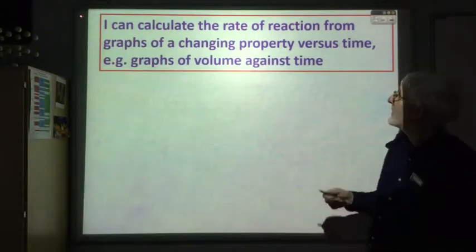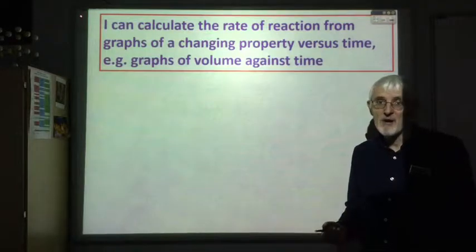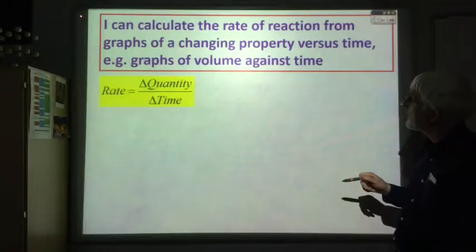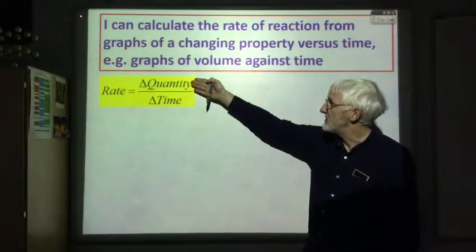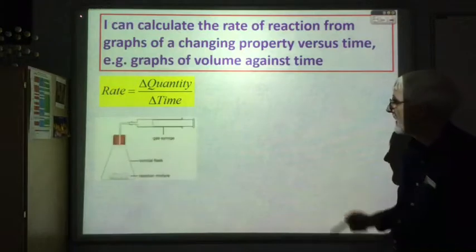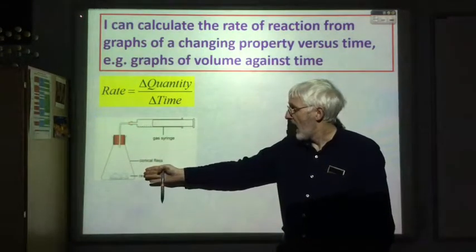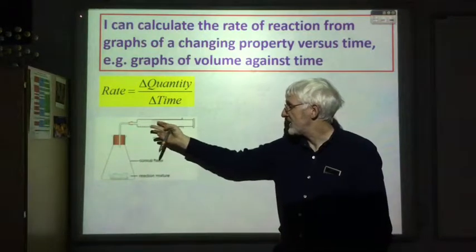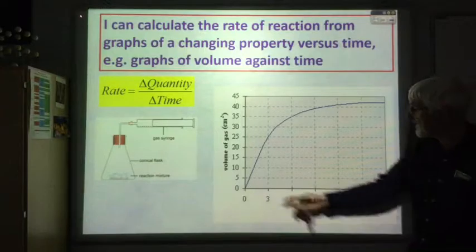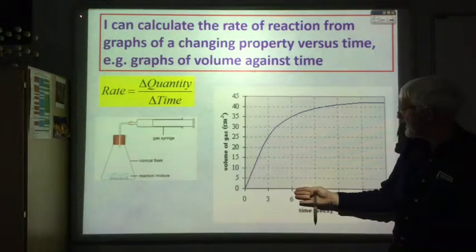At National 5 you learnt to calculate the rate of reaction from graphs of changing property versus time — for example a graph of volume against time or mass loss against time. We'd use the equation in your data booklet: rate equals change in quantity over change in time, where the quantity is either the volume or the mass loss. For a gas volume experiment, the gas goes into a gas syringe and we measure the volume of gas produced at different times, then plot a graph of volume of gas against time.